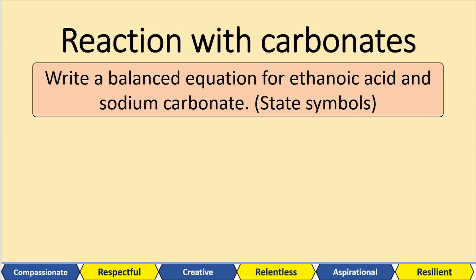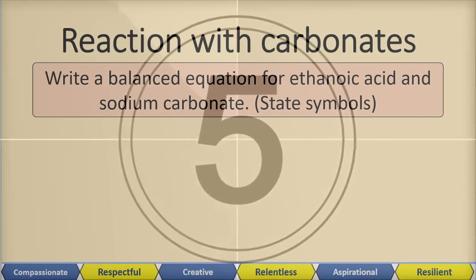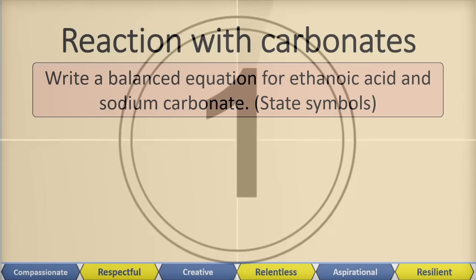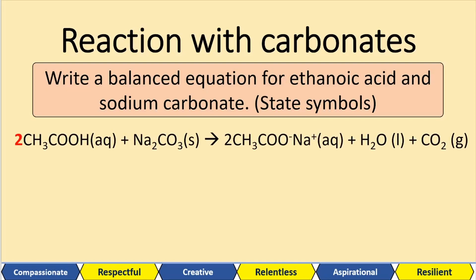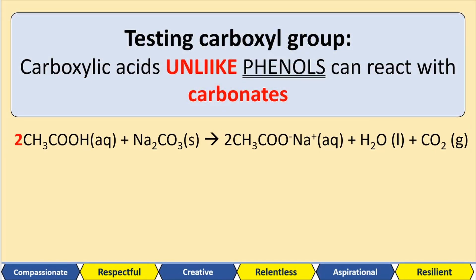Write a balanced equation for ethanoic acid reacting with sodium carbonate. The carbonate is a two-minus ion, so we need two lots of sodium on the left-hand side. Therefore we need two lots of our acid, because each one has to react with the two sodiums. That gives us liquid water and carbon dioxide gas. When testing for the carboxyl group, carboxylic acids — unlike phenols — can react with carbonates. So we can distinguish between phenols and carboxylic acids because carboxylic acids react with carbonates, and phenols don't.